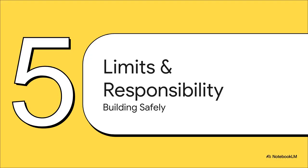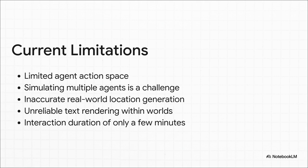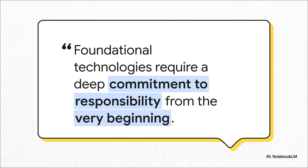Of course, with any technology this powerful, it's super important to be upfront about what it can't do yet and to move forward carefully. The actions an agent can take are still pretty basic. Simulating lots of different agents at the same time is really hard. And it can't create a perfect one-to-one map of your hometown. These are all things they're actively working on. The DeepMind team says this directly — because this tech is so foundational, they know they have to get the responsibility piece right from the start. That's why Genie 3 is only being released as a limited research preview for now, so they can work with others to figure out the risks and benefits before it ever goes wide.